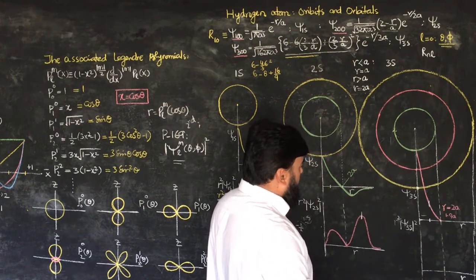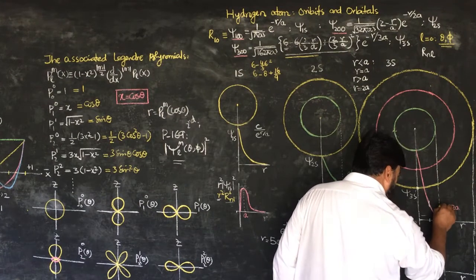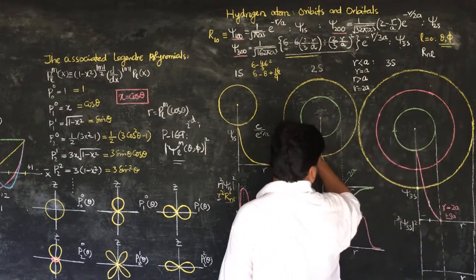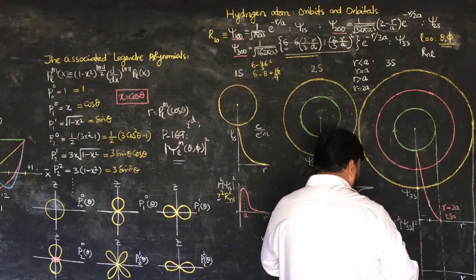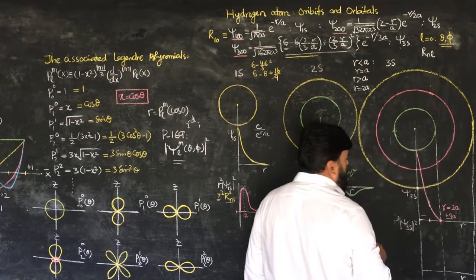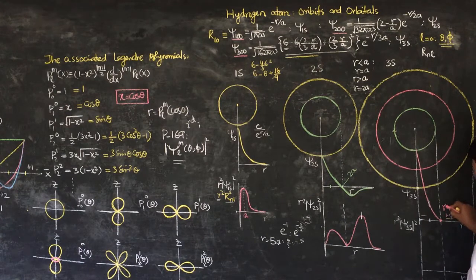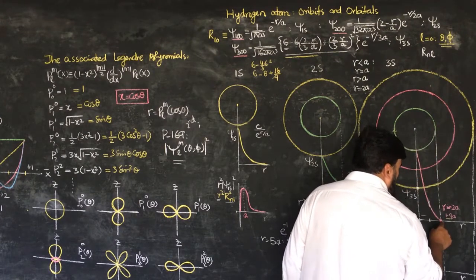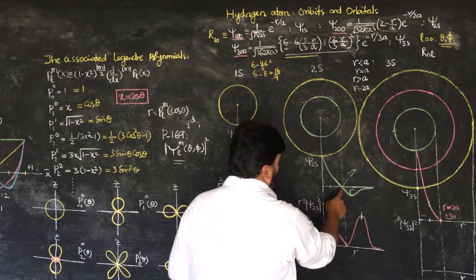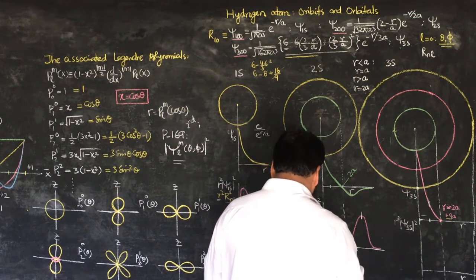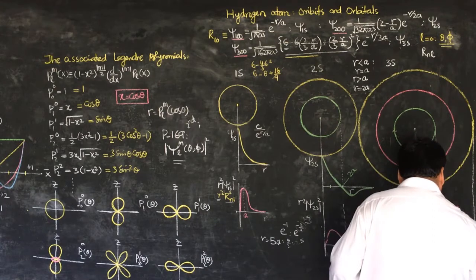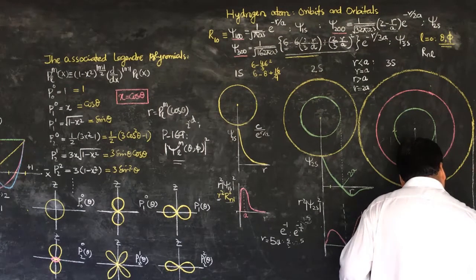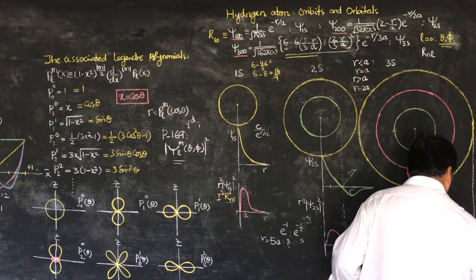When we do the exact calculation, the node is at 1.9a, and at that point we get a proper cancellation so the wave function equals zero. Beyond that zero crossing at approximately 2a₀ (exactly 1.9a), the wave function goes negative — it goes down and then comes back up, then decays again.